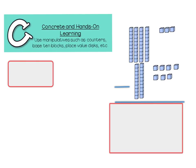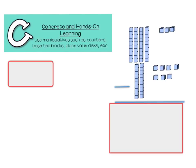Let's first start off on the concrete or hands-on learning. Use manipulatives such as counters, base 10 blocks, place value disks, etc. So I'm going to use base 10 blocks here to represent my 43. I have four 10s and three 1s, and then for 27, I have two 10s and seven 1s.